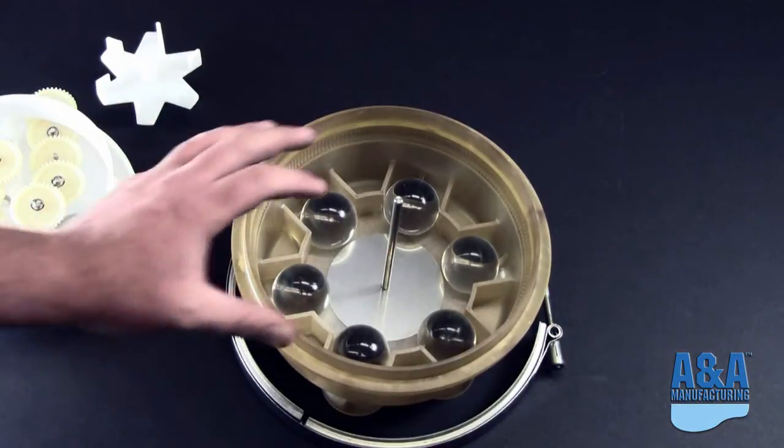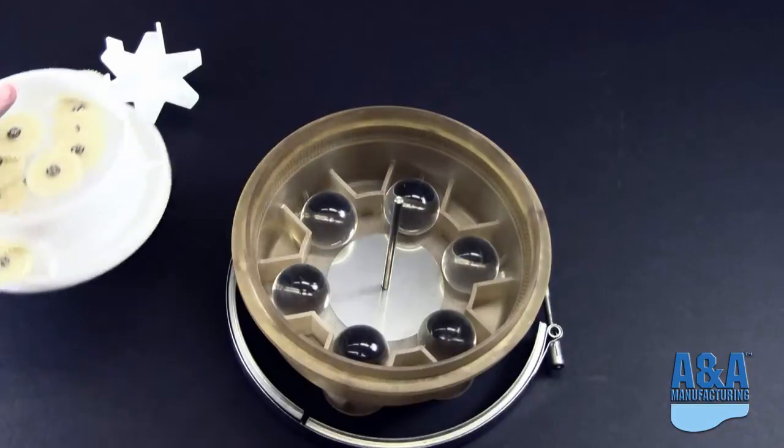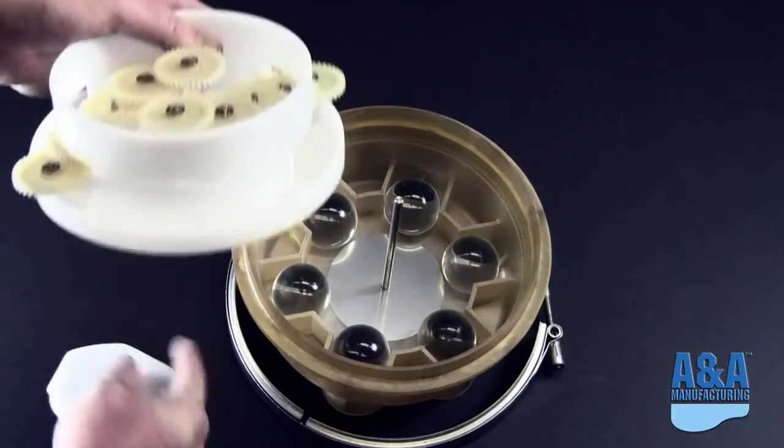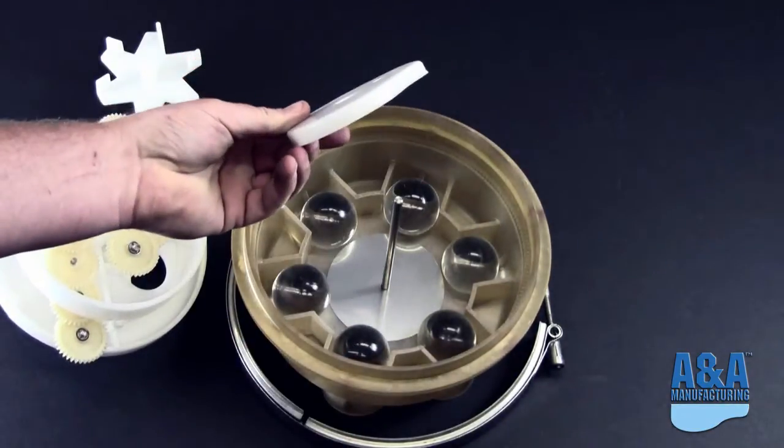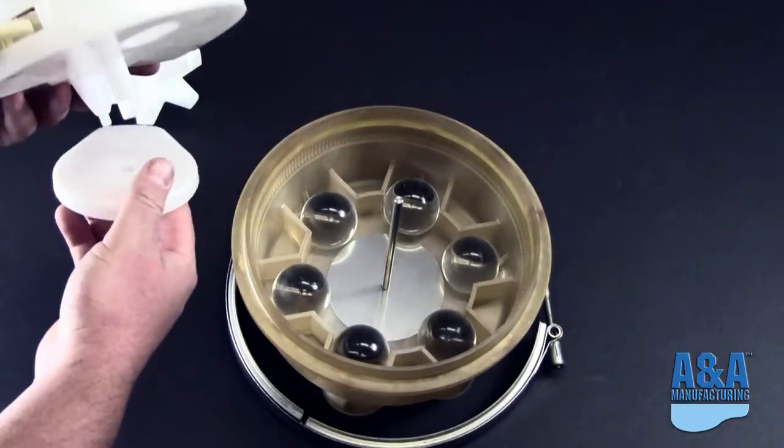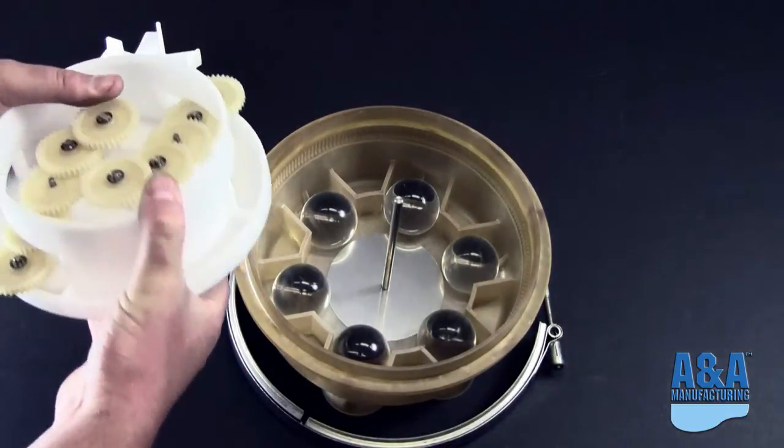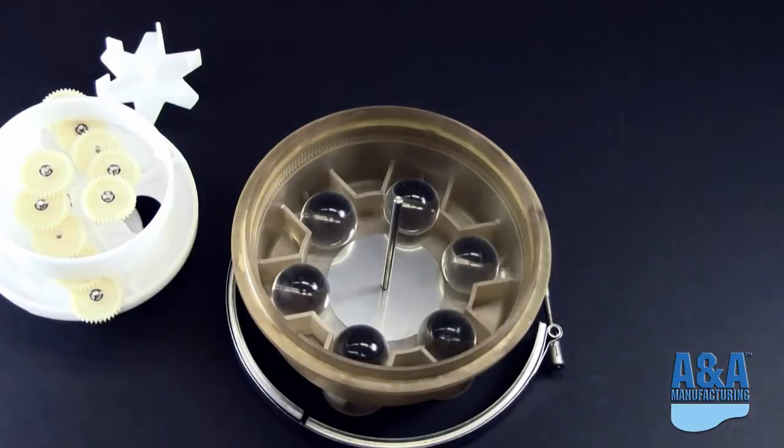And you have the corresponding ball valve cam underneath your gear kit which would just snap on the bottom here. So that helps identify that valve.